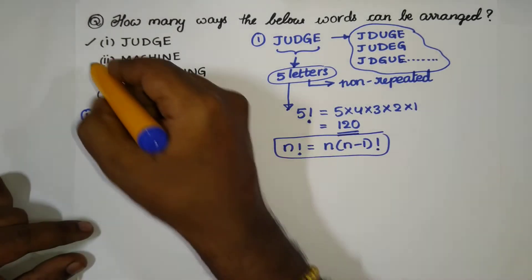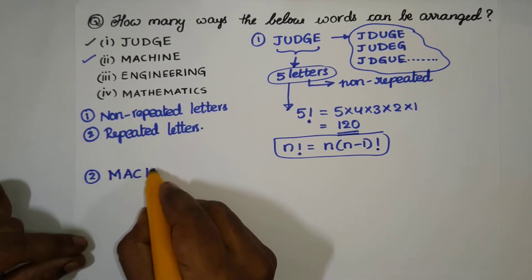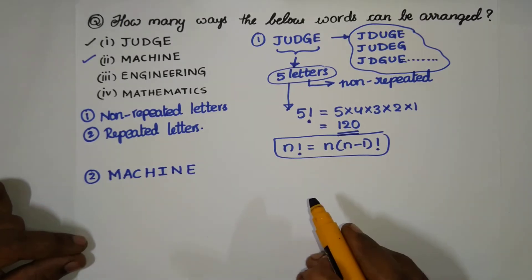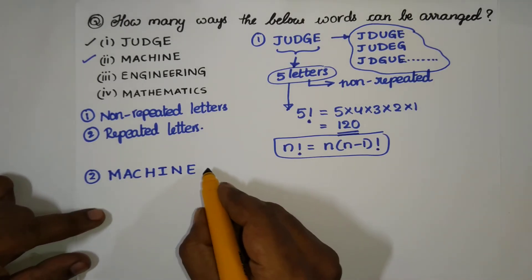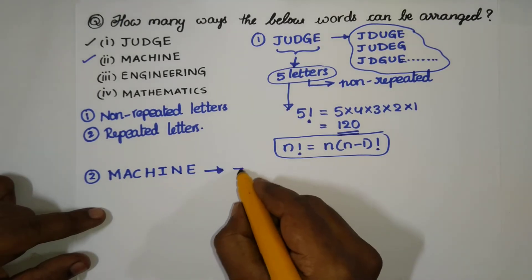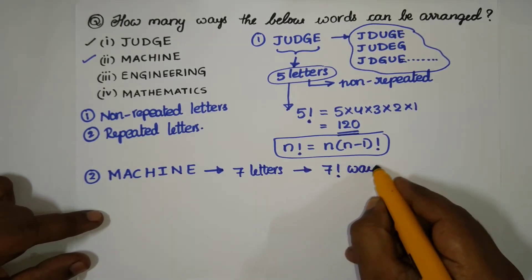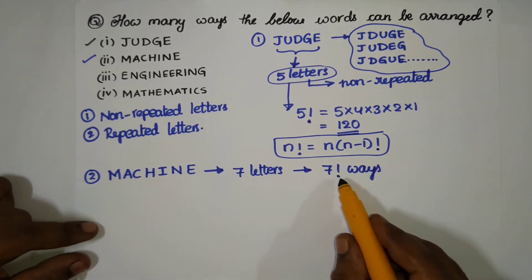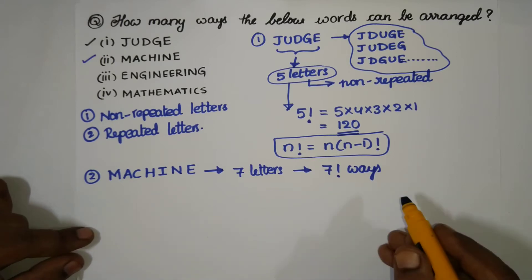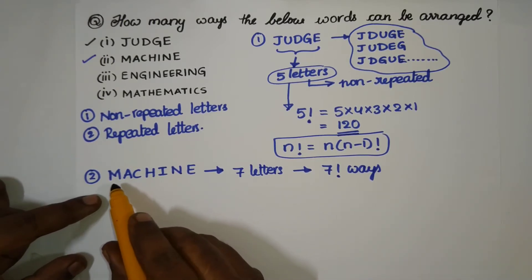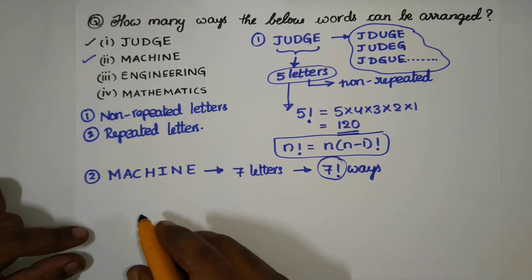Now for the second word: MACHINE — M-A-C-H-I-N-E. Counting the letters: one, two, three, four, five, six, seven. None of the letters are repeating in this word. So with seven letters, we can arrange it in 7 factorial ways — that is 7 × 6 × 5 and so on down to 1. Since no letters repeat, we directly take 7 factorial.